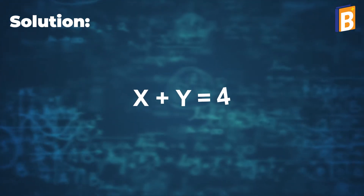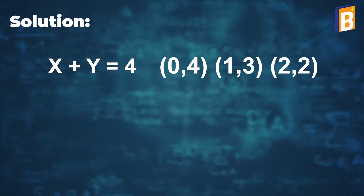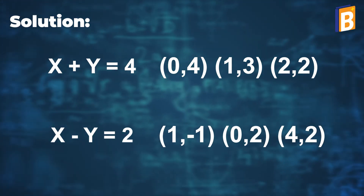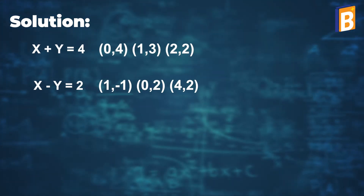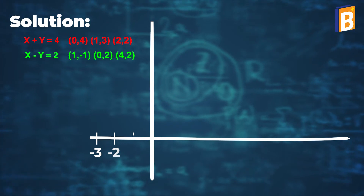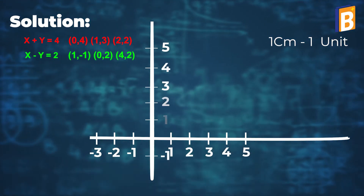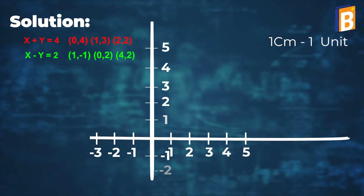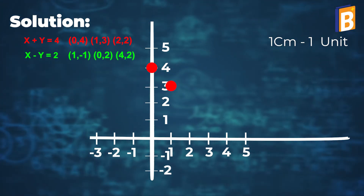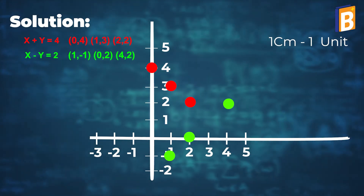Now plot all the values of x and y of linear equation x plus y equal to 4, and x minus y equal to 2, on graph paper. Here the measurement is 1 centimeter equal to 1 unit. Let's plot the x axis and y axis, and now we will plot the values of x and y of both linear equations.